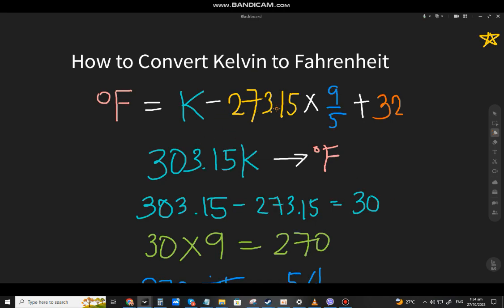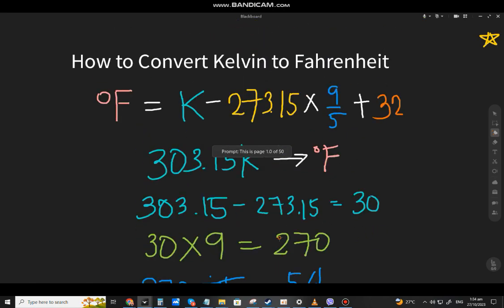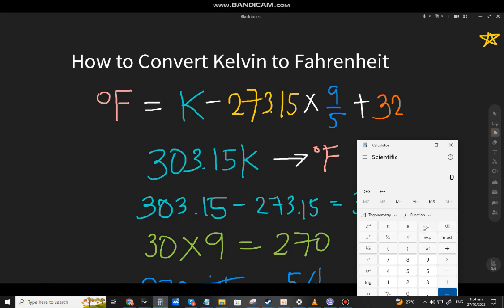So what we do is we minus 273.15, and the answer is 30. We multiply by 9, so it's 270. We divide by 5, that's 54, and add 32. On the calculator: 303.15 minus 273.15, equals, times 9, equals, divide by 5, equals, plus 32, equals 86.